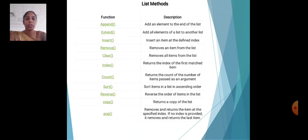Index: return the index of the first matched item. Count: return the count of the number of items passed as an argument. Sort: sort items in a list in ascending order. Reverse: reverse the order of items in the list. Copy: return a copy of the list. Pop: remove and return an item at the specified index. If no index is provided, it removes and returns the last item.